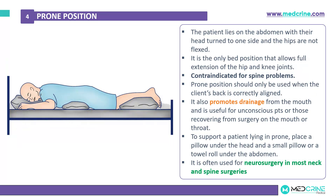The third position is the prone position. In prone position, the patient lies on the abdomen with the head turned to one side and hips are not flexed. This is the only bed position that allows full extension of the hips and legs. However, prone position is contraindicated for patients who have spine problems. It should only be used when the patient's back is correctly aligned, and is known to promote drainage from the mouth. It is used for conscious patients or those recovering from surgeries involving the mouth or throat.